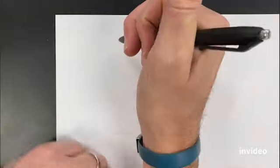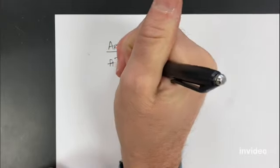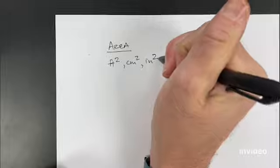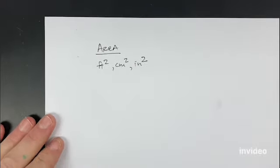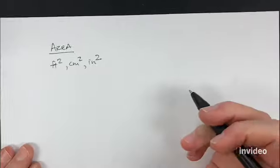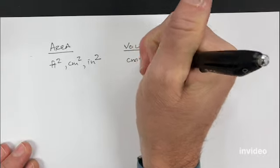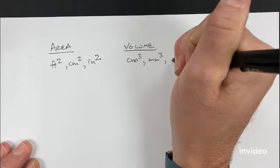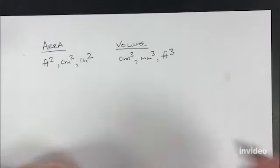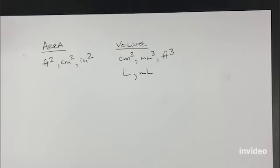We recognize area if the unit is squared. So if we have feet squared, centimeters squared, inches squared, we're dealing with an area — we've taken two dimensions and multiplied them to figure out what area an object has. For volume, we could have things like cubic centimeters, millimeters cubed, or any of our normal distance or length units cubed. Or we could also have something like liters or even milliliters. Liters and milliliters don't have the cube on it, but it's still a measure of volume.